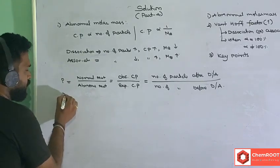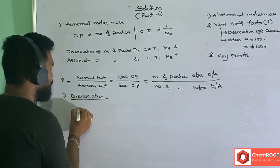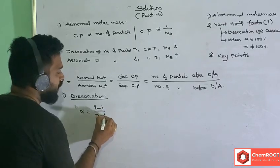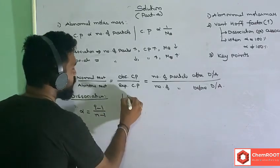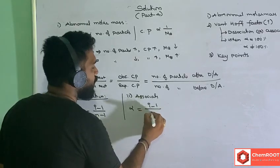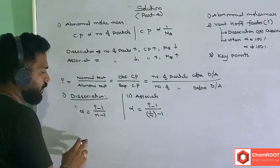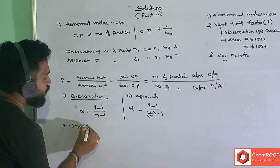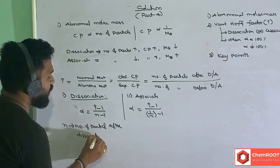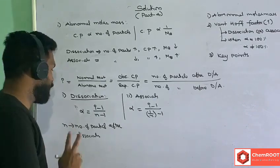When dissociation is taking place, the expression for alpha (degree of dissociation) comes as: alpha = (i − 1) / (n − 1). Here, alpha is the degree of dissociation, i is the Van't Hoff factor, and n is the number of particles after dissociation. For example, taking NaCl — after dissociation it gives two particles, Na⁺ and Cl⁻, so n = 2.